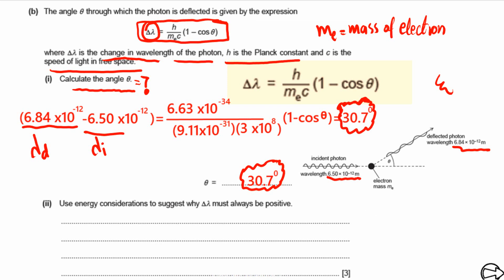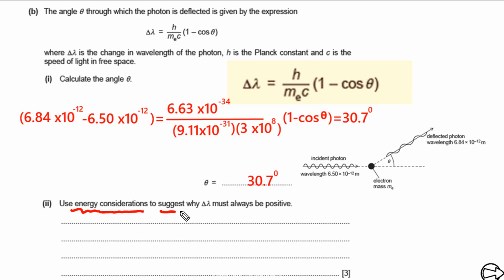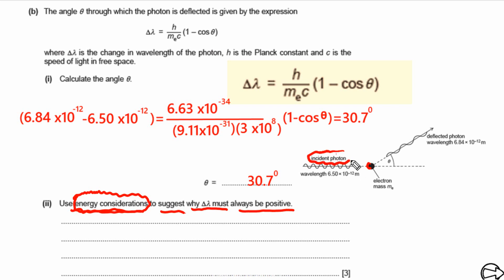For the second part, we need to use energy considerations to explain why delta lambda must always be positive. This is based on energy conservation. When the incident photon collides with the electron, the electron gains kinetic energy. So in this deflection, the photon is losing energy and the electron is gaining kinetic energy — the energy of the photon decreases.